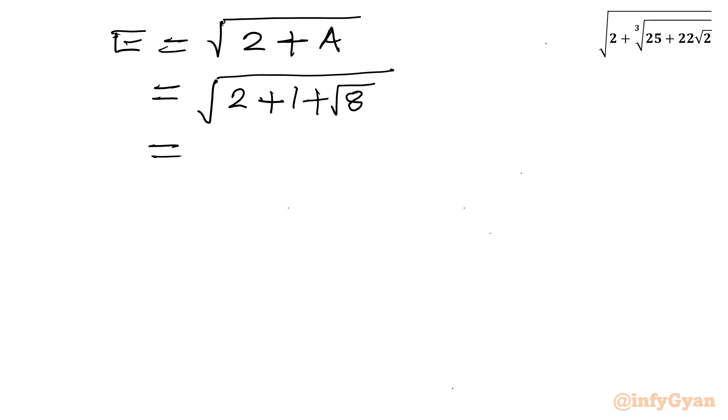Now I will write 1 factorization of 8. It will be 4 times 2. So square root of 4 we can write it as square root of 2 square. So this square root and square will be over. It is 2. Now square root of 2 plus 1 plus 2 root 2.